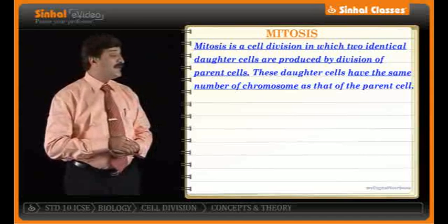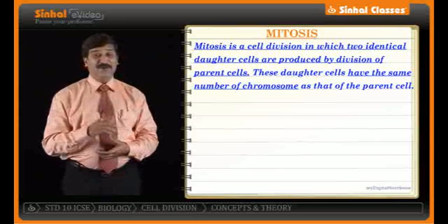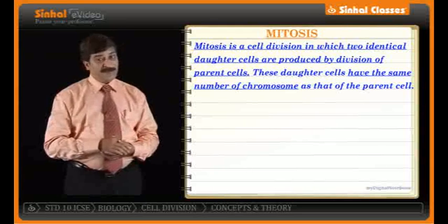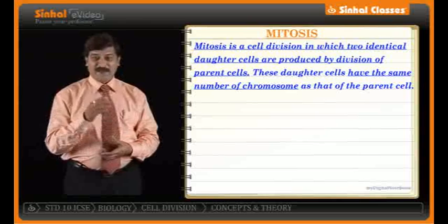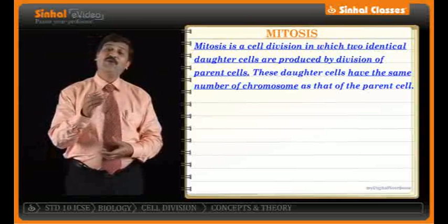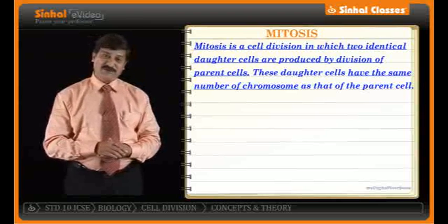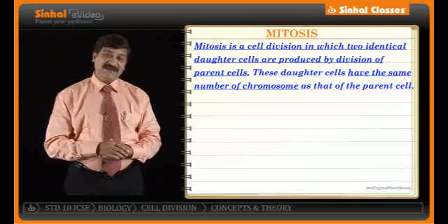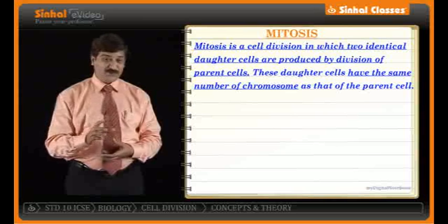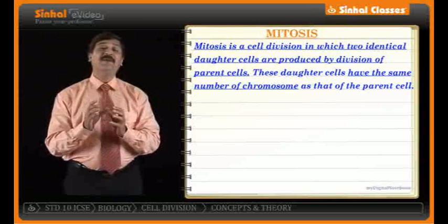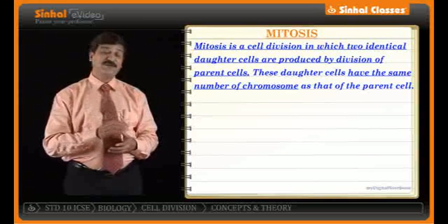These daughter cells will have the same number of chromosomes as that of the parents. If the parent has 2n number of chromosomes, the same number — 2n — will be seen in the daughter cells. So it is not half, but the same number of chromosomes.